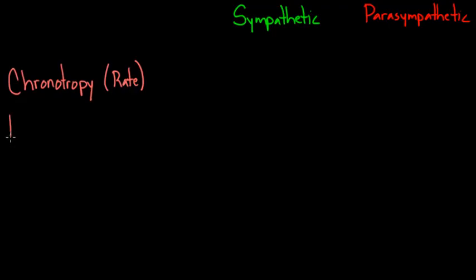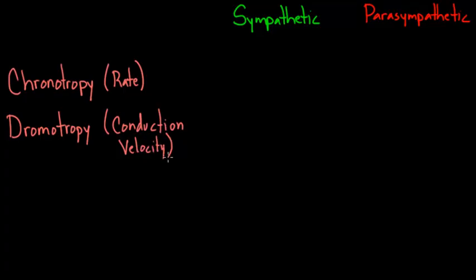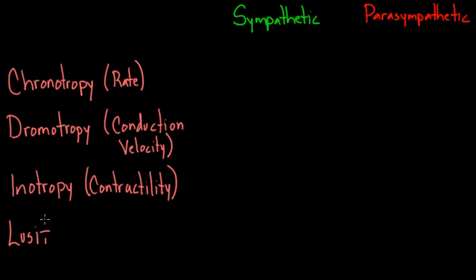The second term is dromotropy, which has to do with conduction velocity—how fast a signal is going from one cell to the next. Then we have inotropy, which has to do with contractility, how hard the muscle is contracting, the force of contraction. And lusitropy has to do with relaxation, how fast it's relaxing.